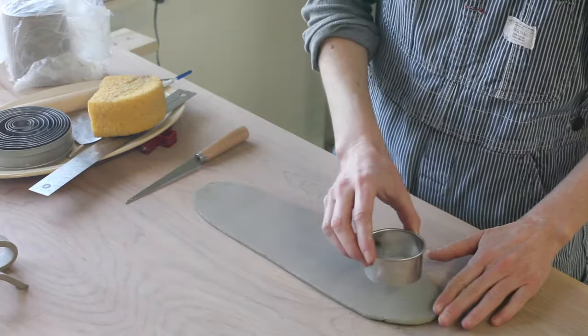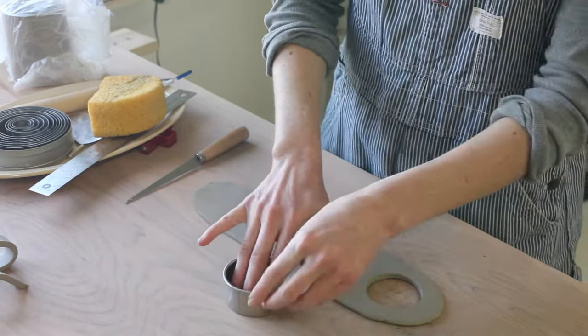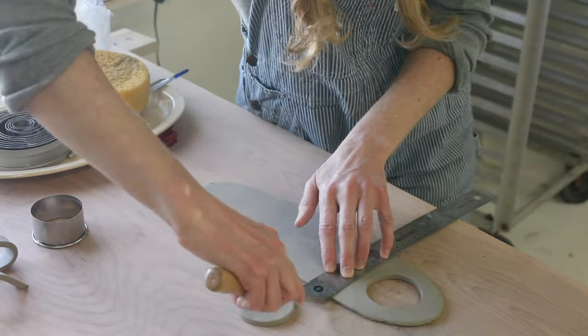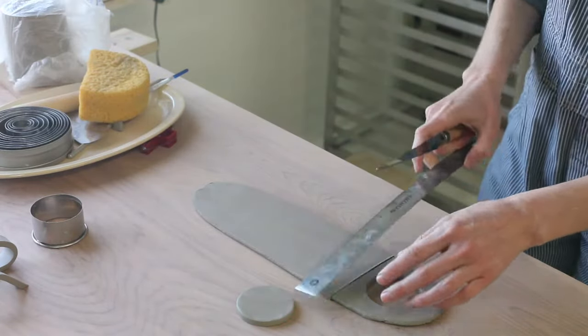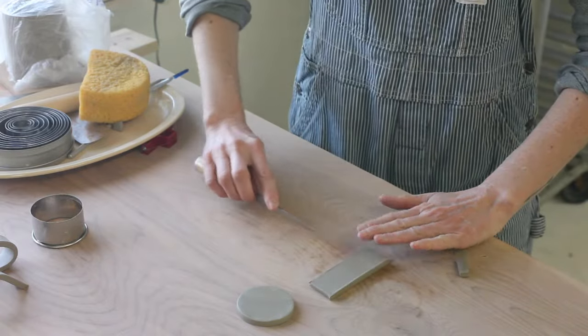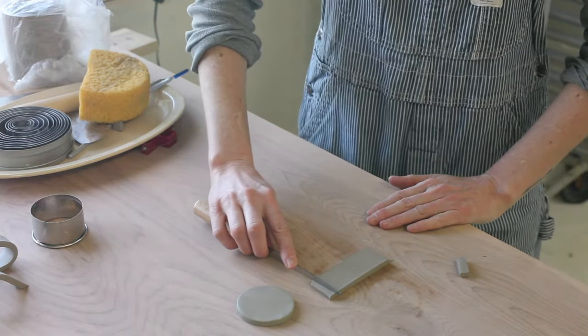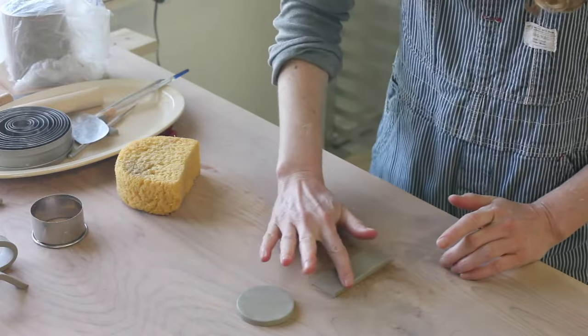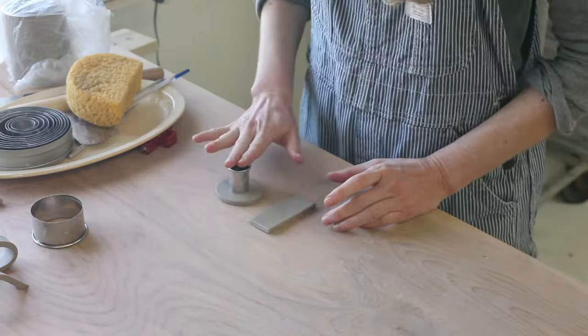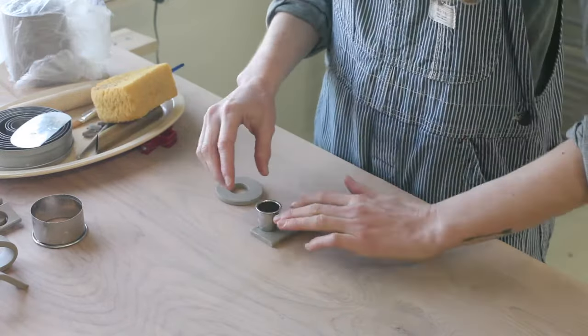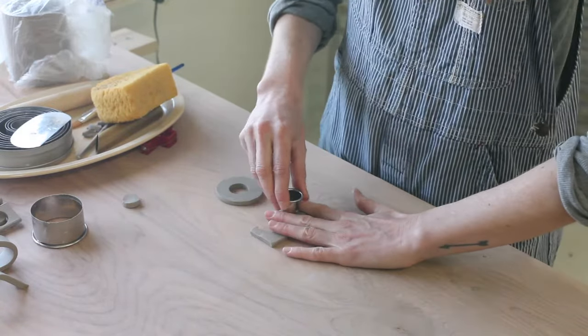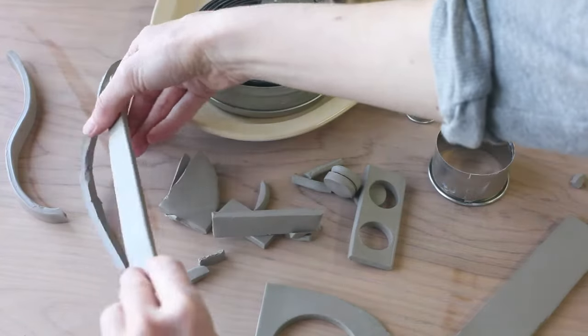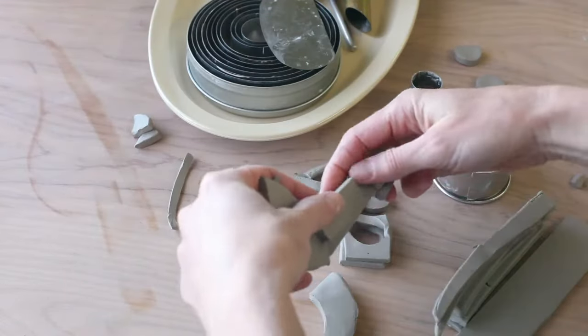You can also cut shapes out of a slab to make interesting handles. Keep in mind that our clay will shrink about 10% so leave extra room to fit your hand. Always gather up your clay scraps while you work and wrap them in plastic so they don't dry out.